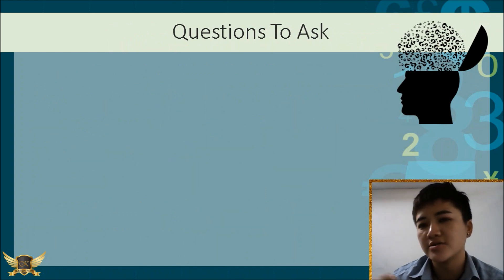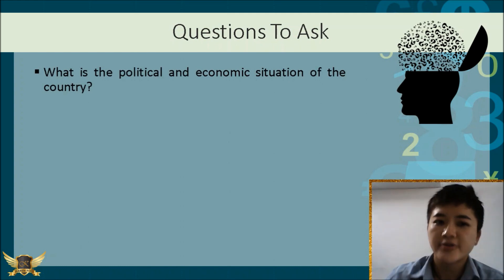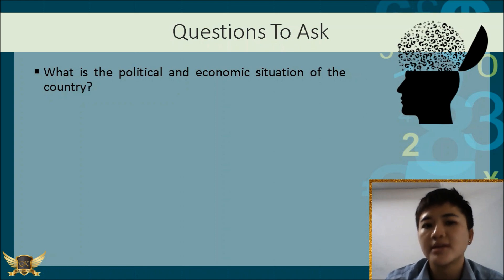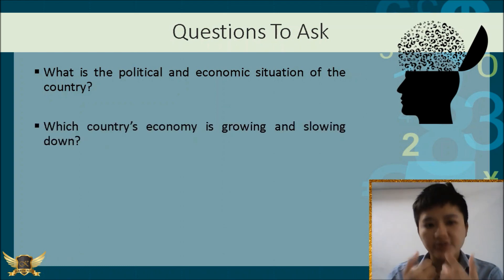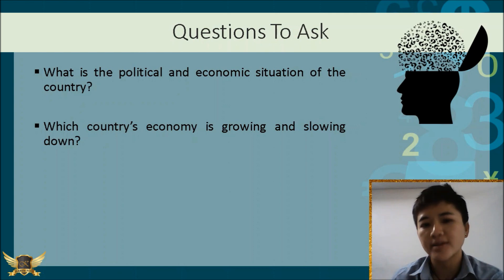When you're doing fundamental analysis, you need to ask a couple of questions. Every time you analyse an economic event, you need to ask four main questions. The first question is: what is the political and economic situation of this country based on this data? And not only for this country, but also for the country of the counter currency you're trading. Based on that comparison, you need to determine which country's economy is growing or slowing down.